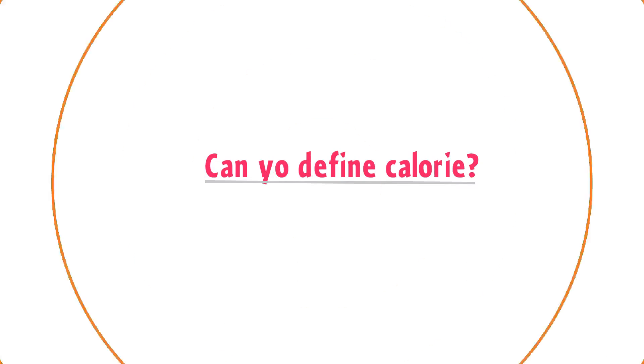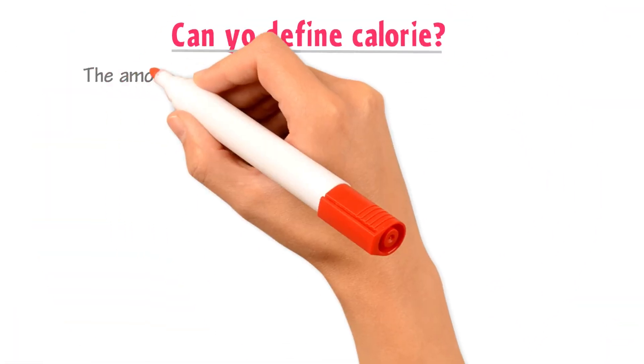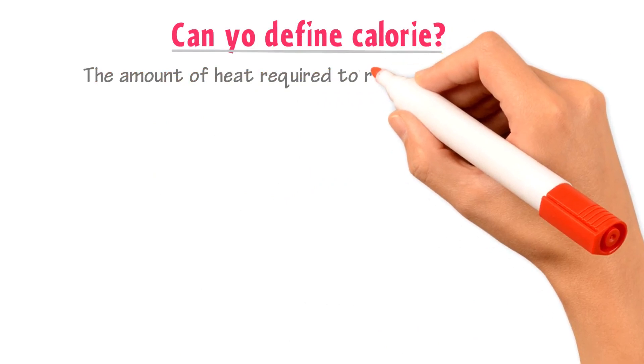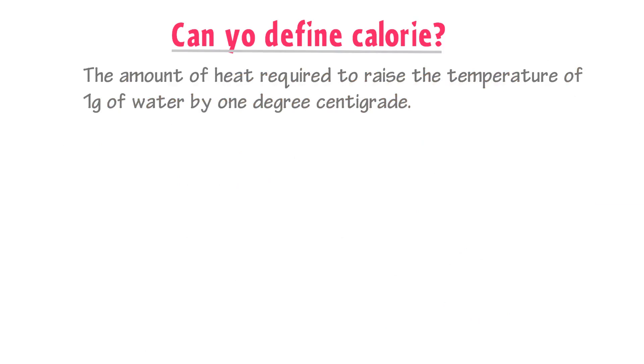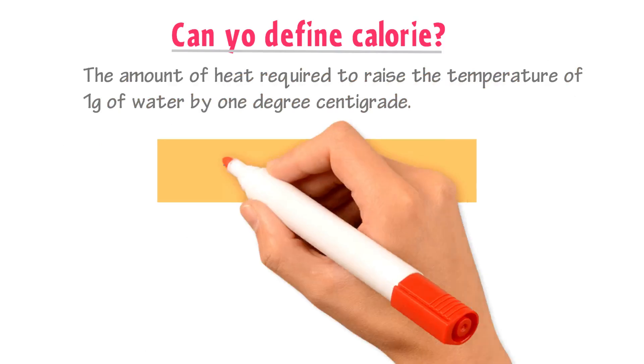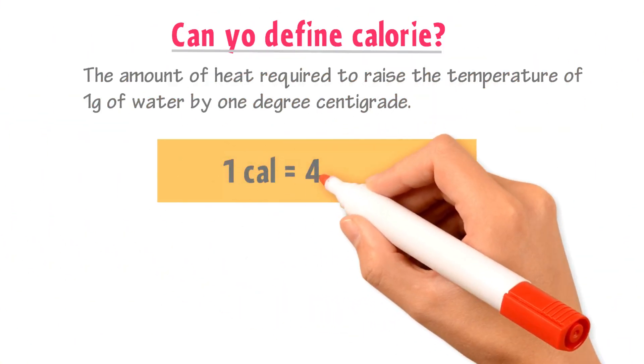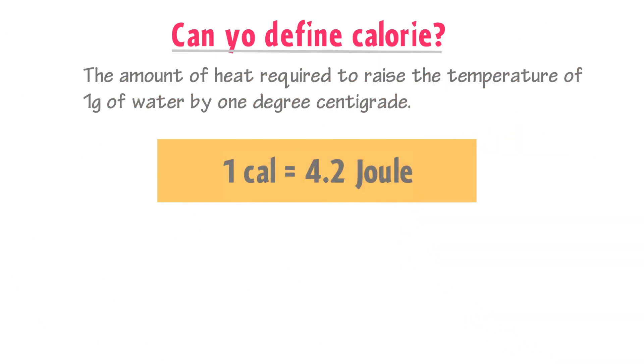Well, one calorie is defined as the amount of heat required to raise the temperature of one gram of water by one degree centigrade. Remember that one calorie is equal to 4.2 joule.